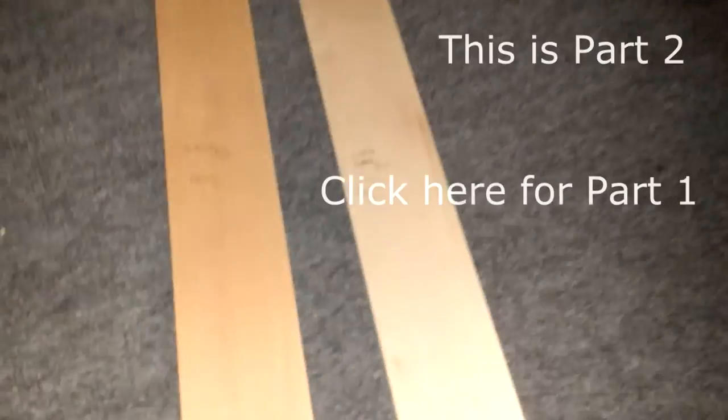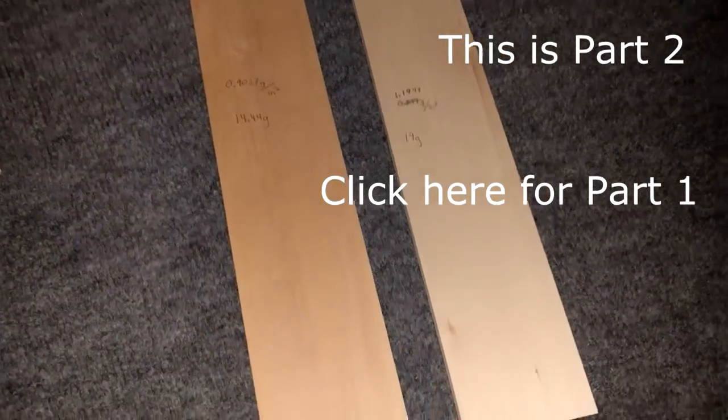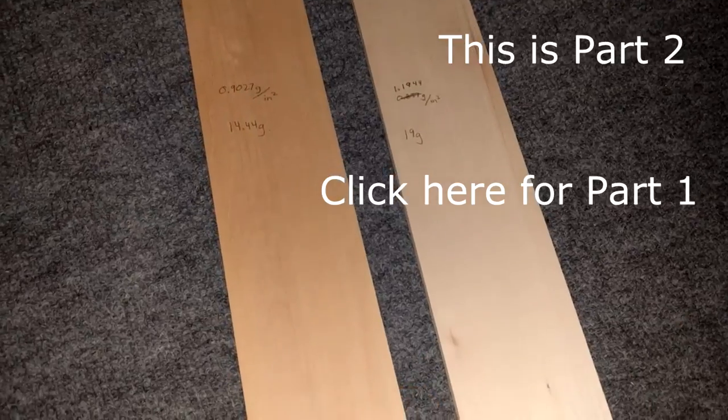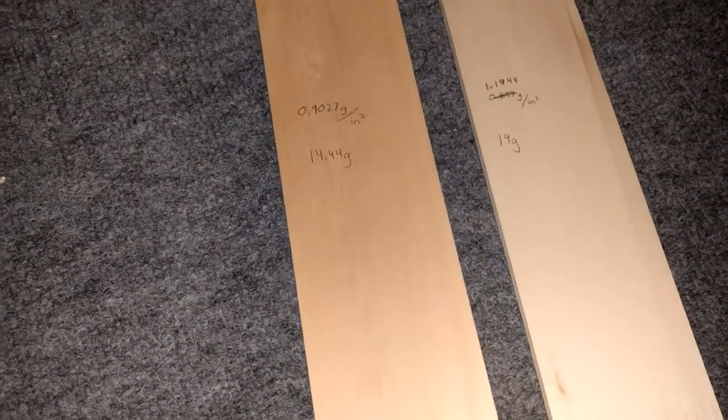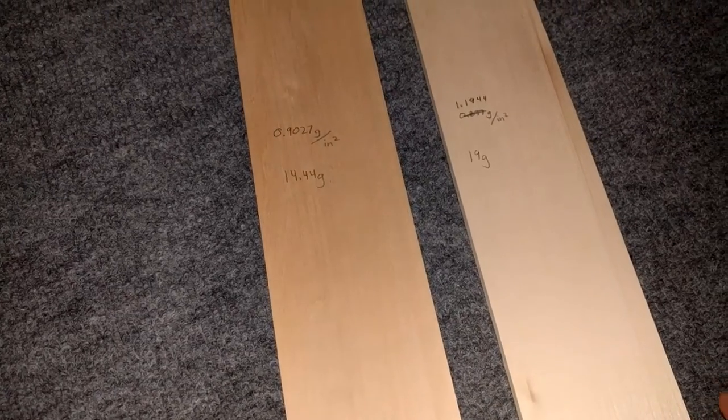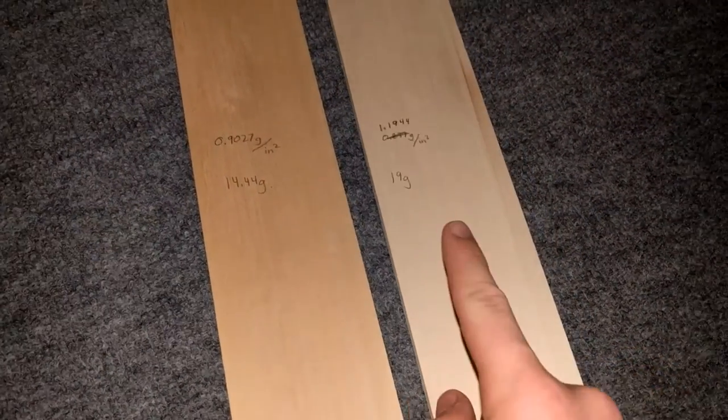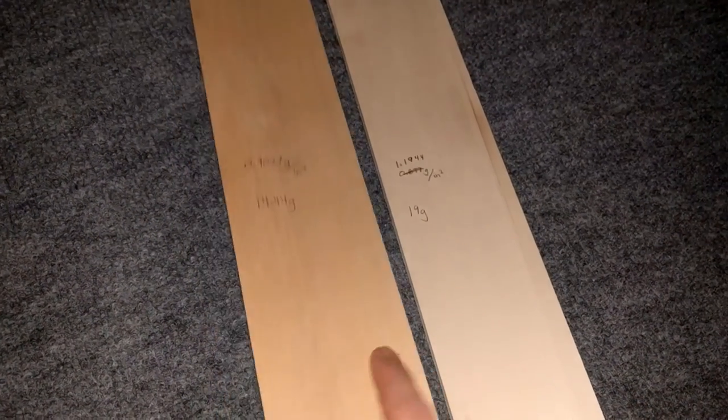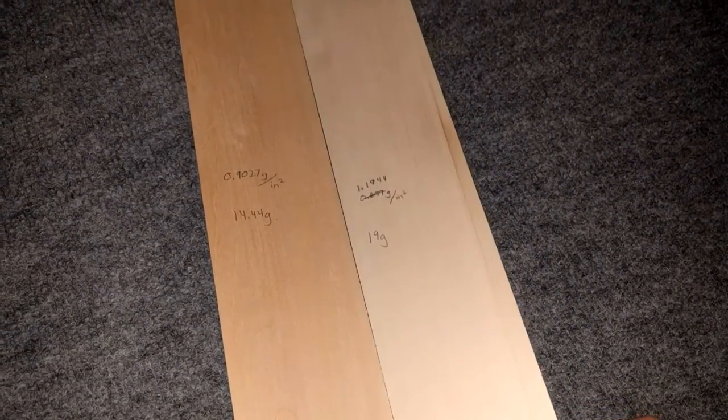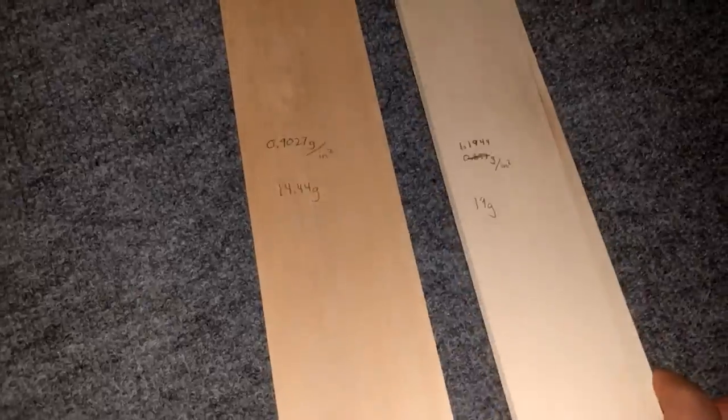I just did the math and figured out that for the 2 by 8 inch pieces I need for the top and bottom plates, the thinner wood would weigh 14.5 grams and the thicker piece about 19 grams. I've decided to use the thicker piece for the bottom plate and the thinner one for the top plate, because I want the bottom plate to be sturdier to withstand any crashes.